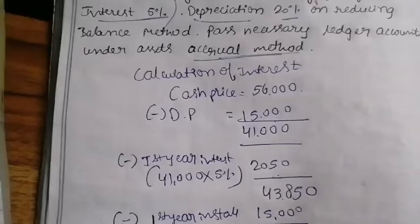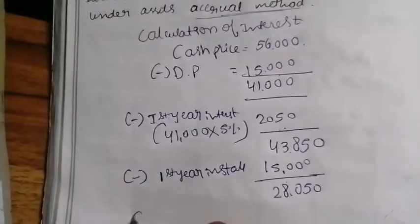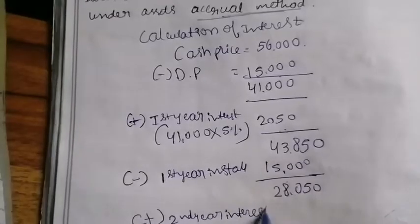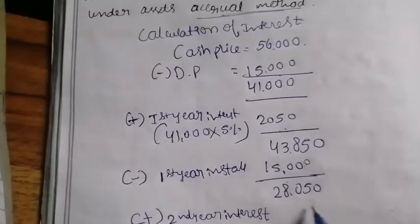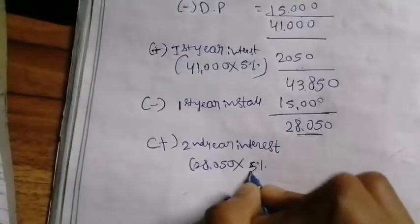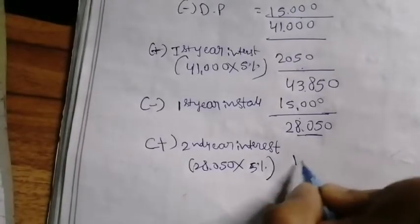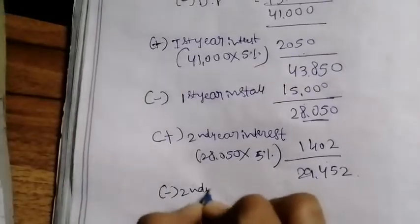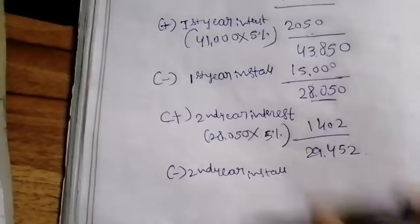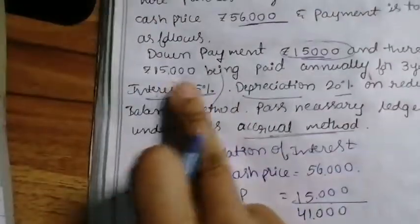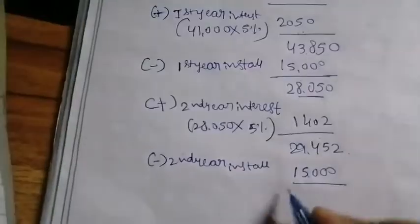Second year: the opening balance is ₹28,050. Adding second year interest at 5% gives ₹1,402, totaling ₹29,452. Minus the second year installment of ₹15,000, we get ₹14,452.